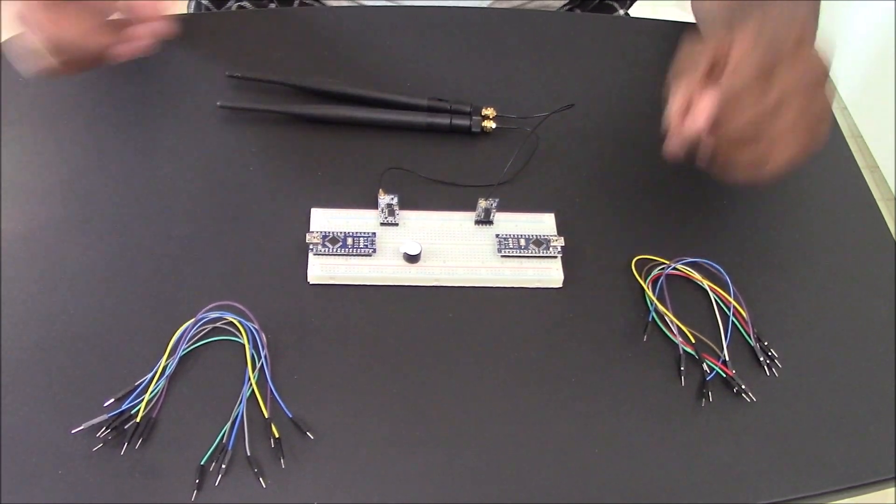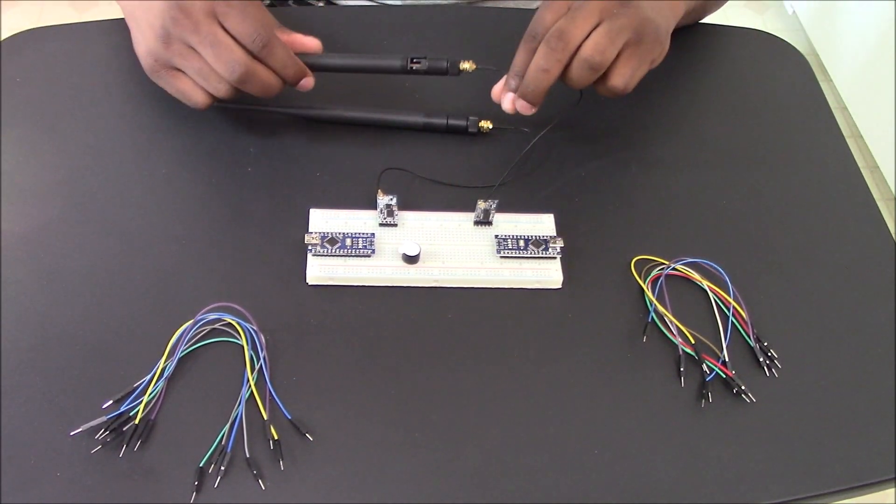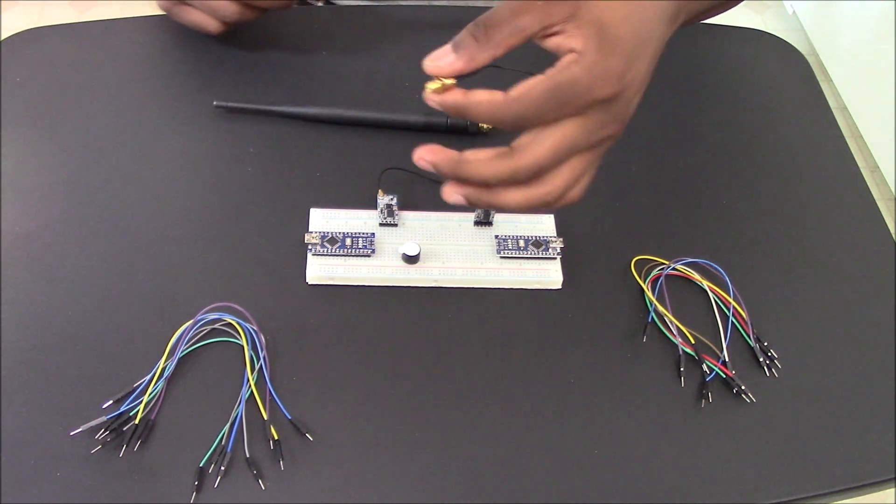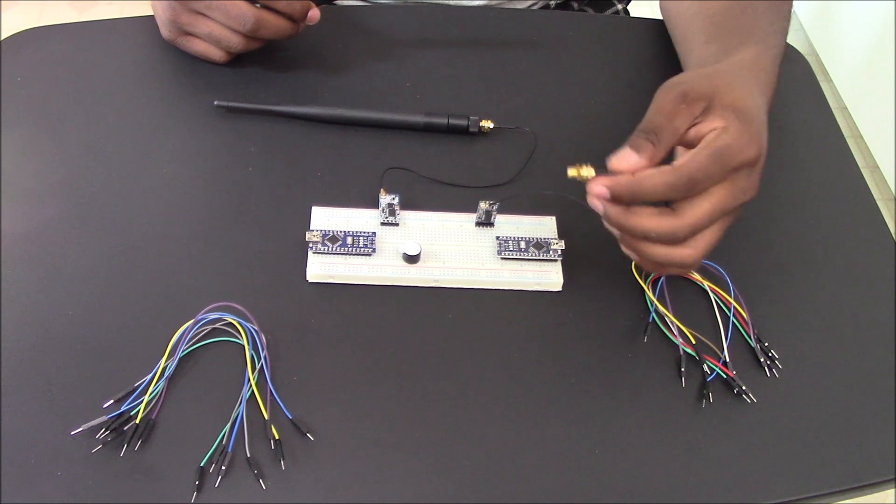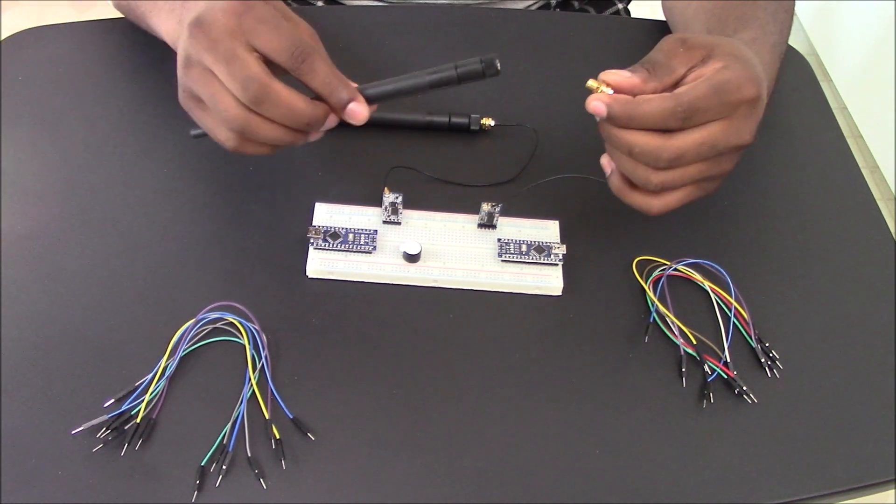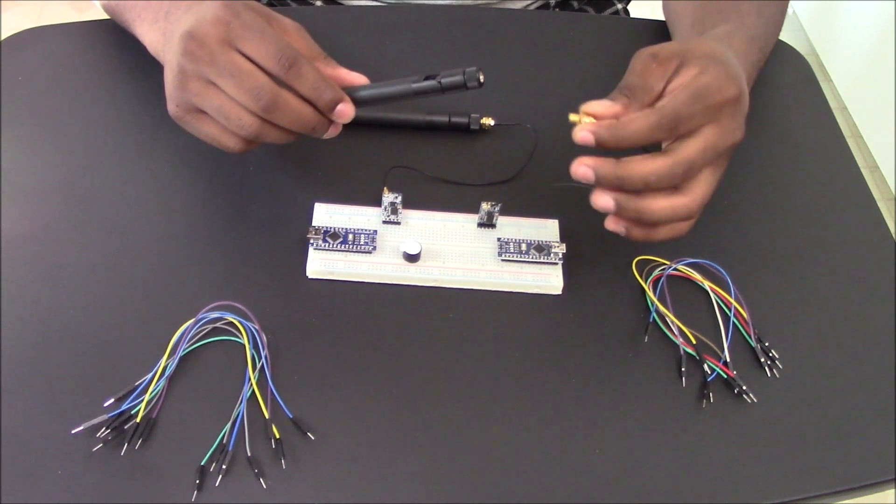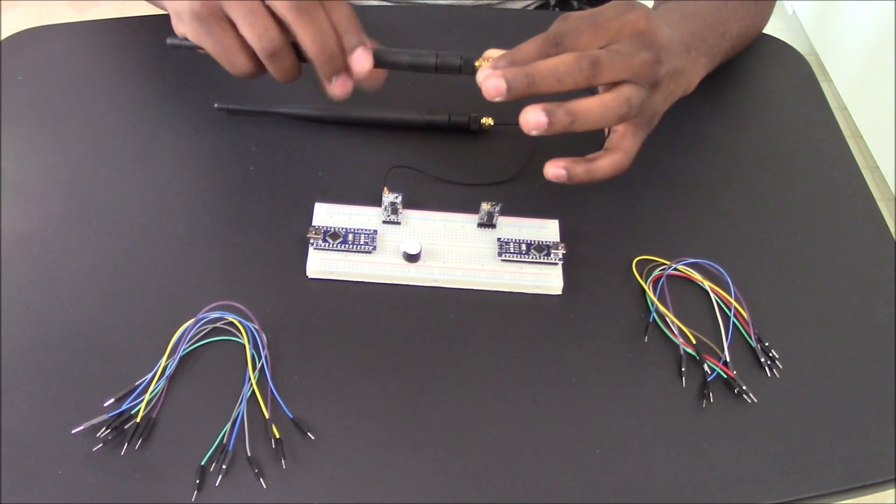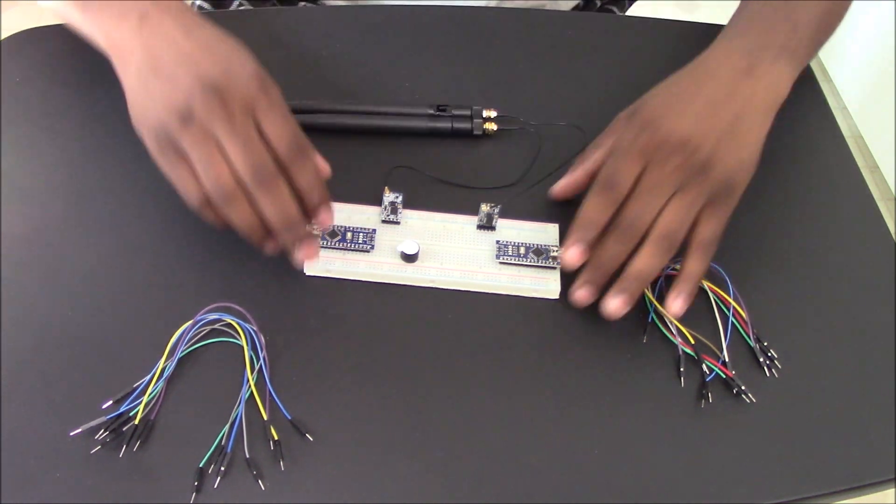So first thing you need to do when you have your HC12 is to make sure that you buy it with the pigtail antenna, which is just this section here that you see. And then you need to make sure you buy these antennas. These may or may not come with the pigtail as well, but I have a link in the description so I can show you guys what I actually bought.